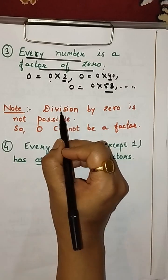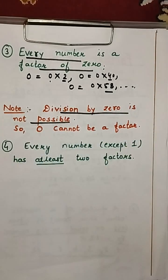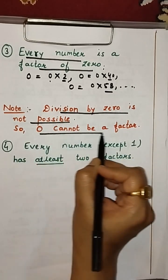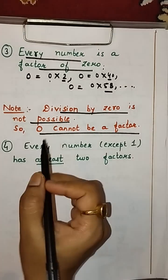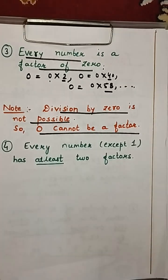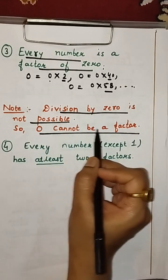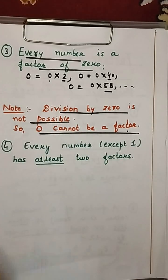However, division by 0 is not possible. To be a factor, the number must be an exact divisor. Since division by 0 is not possible, 0 cannot be a factor of any number. But every number is a factor of 0.